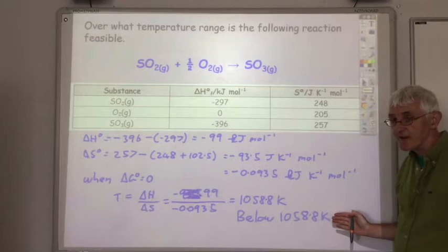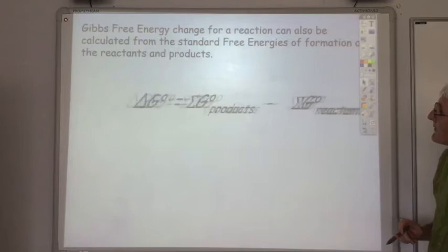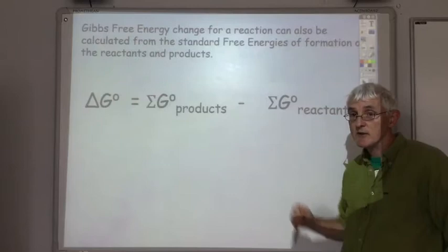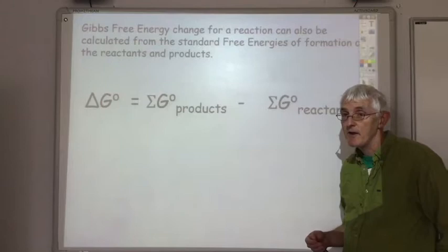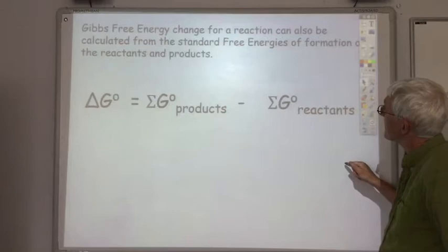Hopefully you got the answer that the reaction is feasible below 1058.8 Kelvin. Another way to work out delta G for a reaction is simply: delta G of products minus delta G of reactants — and again this equation is in your data booklet. It's quite unusual to find G naught values given in a question, so it's not a type of question you'll see very often, but it did come up in the 2016 past paper.